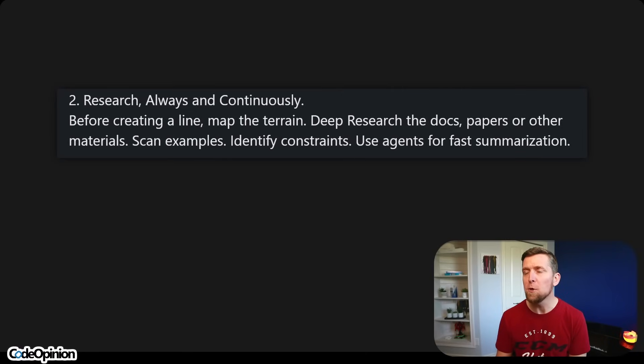Number two: research always and continuously. Before creating a line, map the terrain — deep research the docs, papers and other materials, scan examples, identify constraints, use agents for fast summarization. This can sound like we're trying to rationalize rule one — vibe coding without a plan — but these really do go hand in hand. Yes, you're exploring and being iterative, but you also want to be using tooling like LLMs to understand documentation, the problem space, and the solution space. You don't know what you don't know, and that's what you're learning. It's about building that understanding and knowledge.